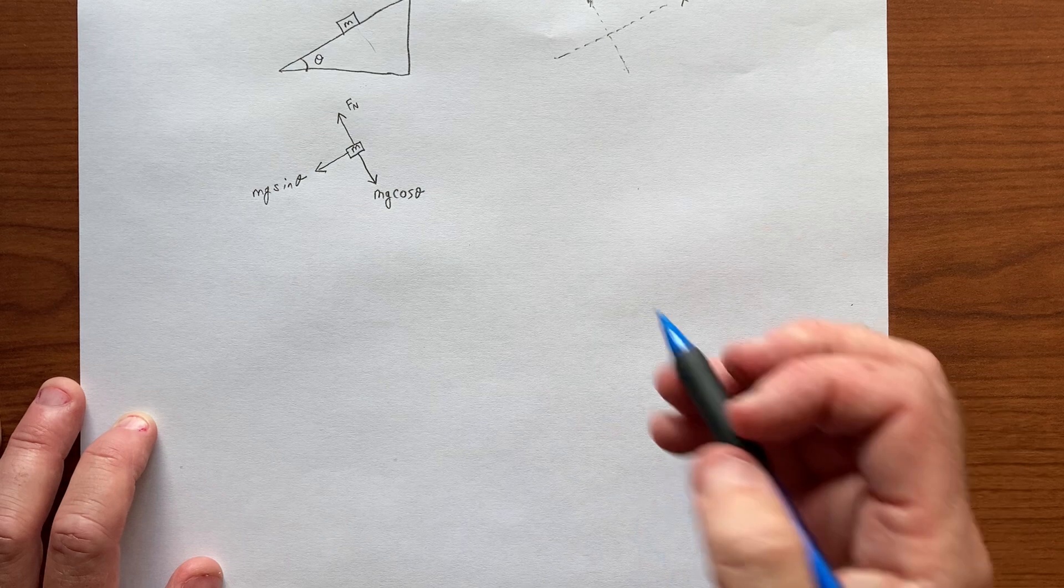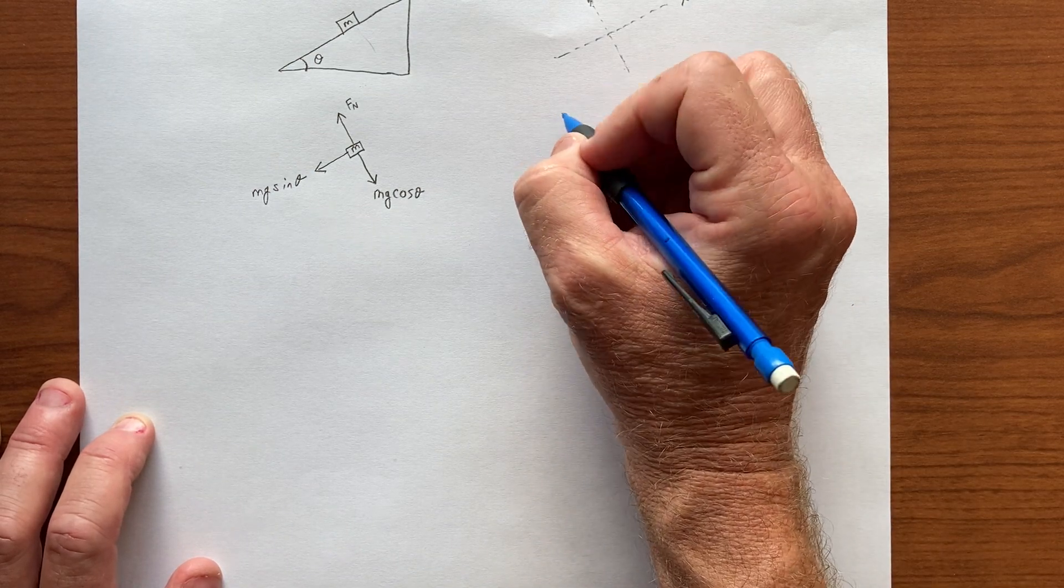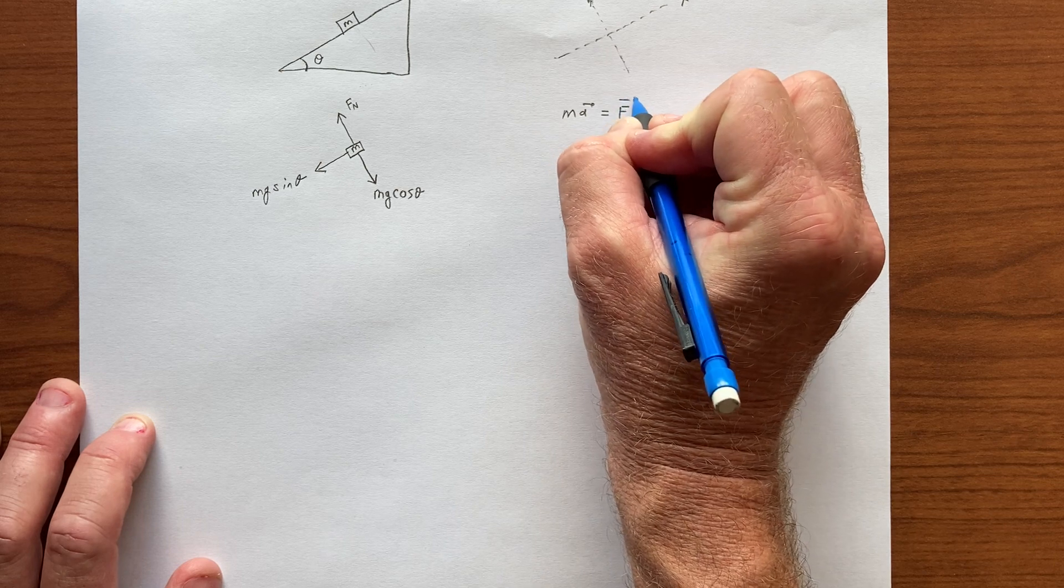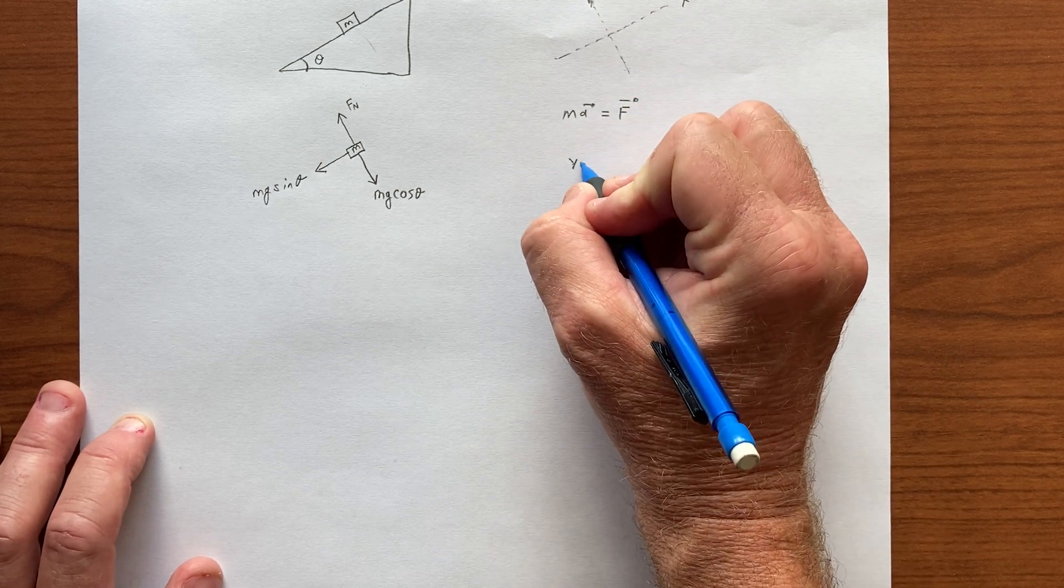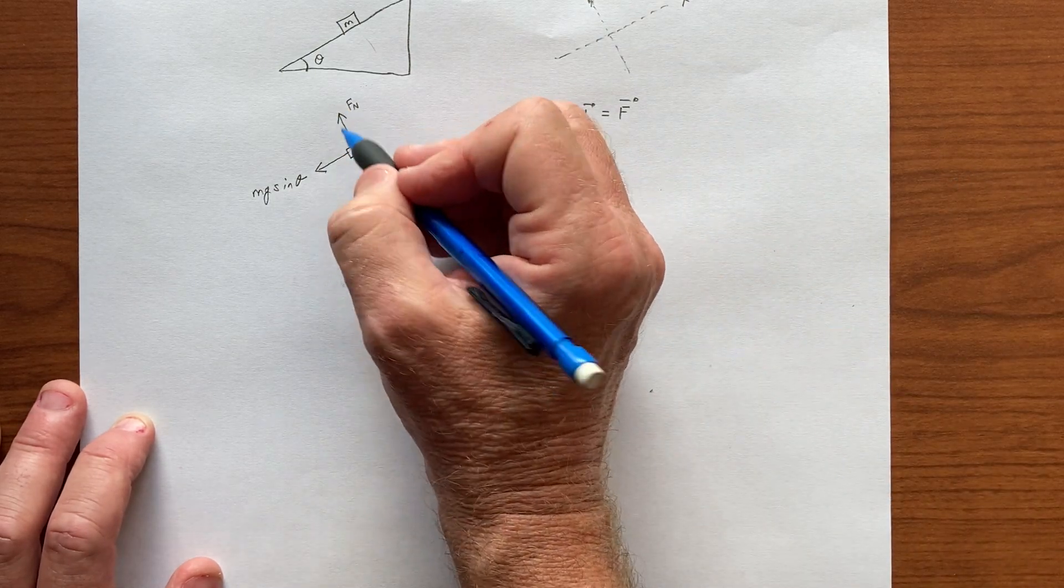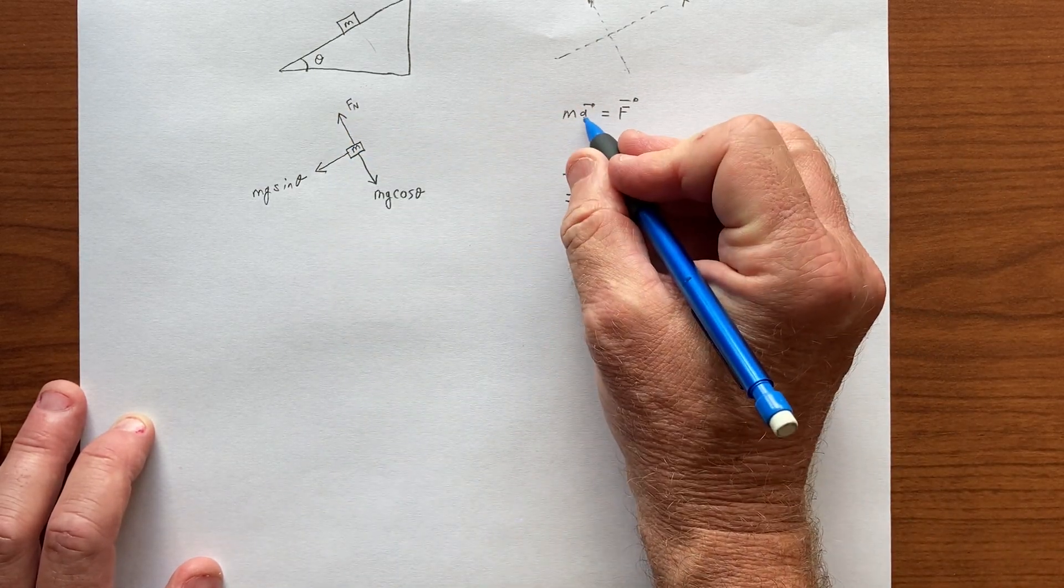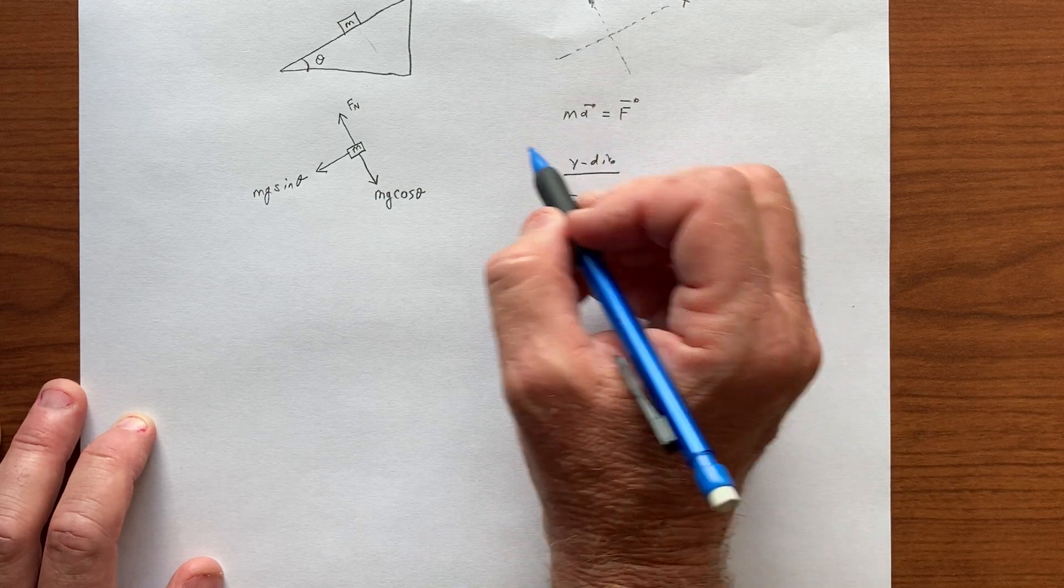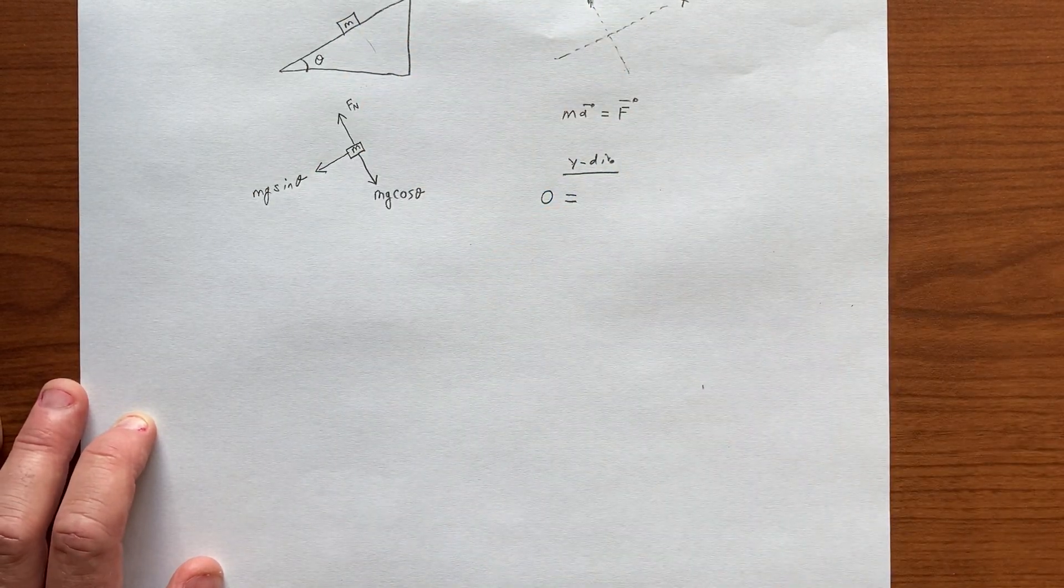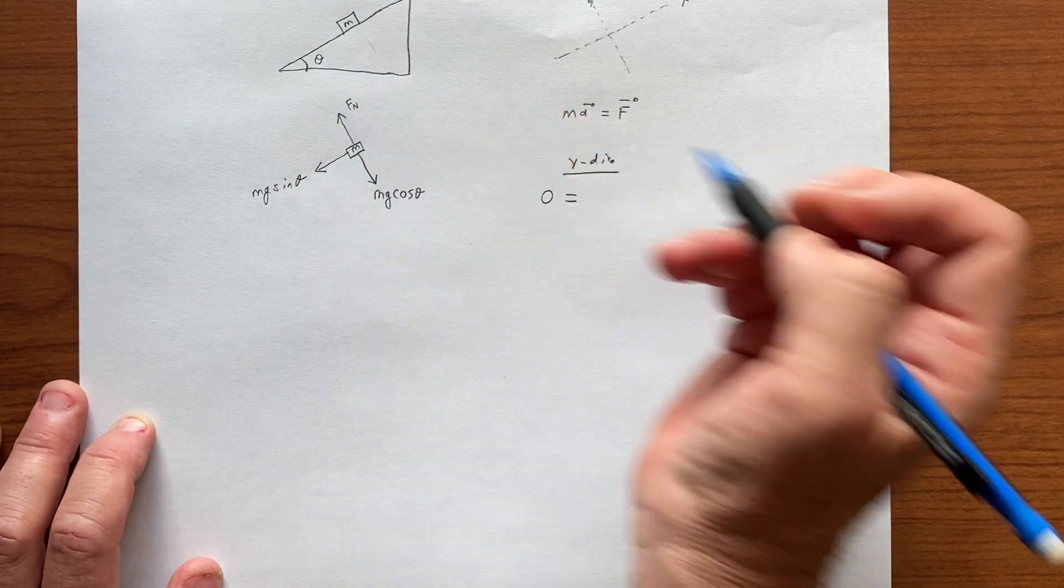So that's the free body diagram, and so we can now break up ma equals f into its component, like a tilted y direction. So what does that say? Well, the left-hand side, the ay, there's no acceleration that way, so we have zero, and the forces we can read them off the free body diagram.